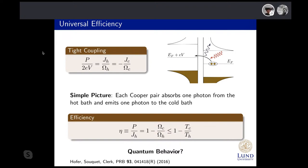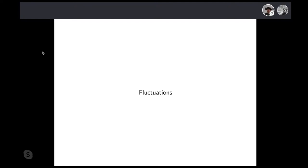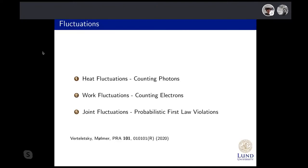One might ask: where is the quantum behavior? We have quantum ingredients — superconductors, a coherent process — but one could think of a classical engine motivated by the same simple picture that gives the same mean values. I will argue that this picture starts to break down when we look at fluctuations, and it is in the fluctuations where we really see the quantum behavior. First I'll talk about heat fluctuations — which amounts to counting photons — then work fluctuations, which amounts to counting Cooper pairs, and finally the joint fluctuations of heat and work, where we find all the interesting quantum features and probabilistic violations of the first law.